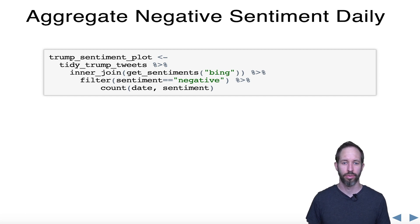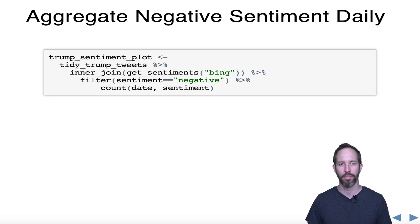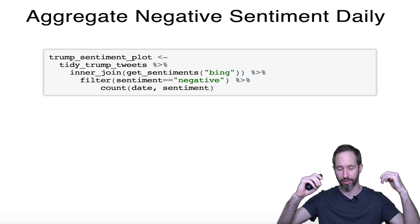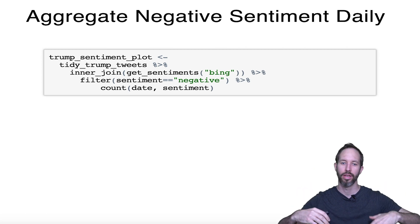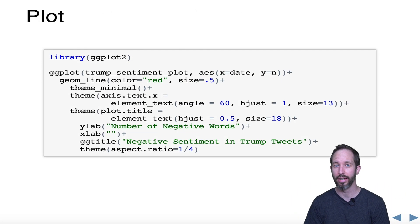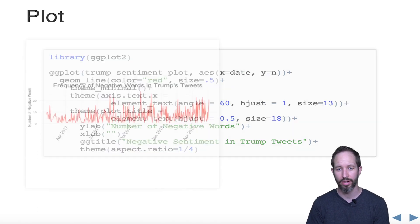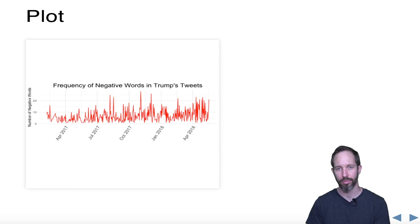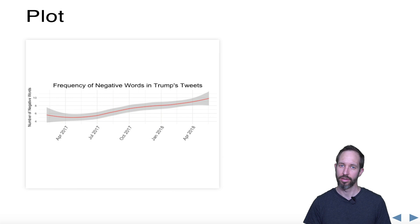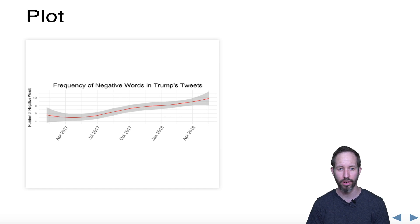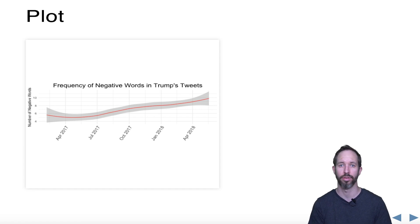We want to do that so we can plot sentiment of Trump tweets over time. In this chunk of dplyr code, we use an inner join to join the Trump tweets with the sentiment dictionary, count them, drop everything that's not negative, and count the number of negative tweets by day. We plot this with ggplot using a line graph, and we see the number of negative tweets by day — or if we smooth it, a smoothed trend line.